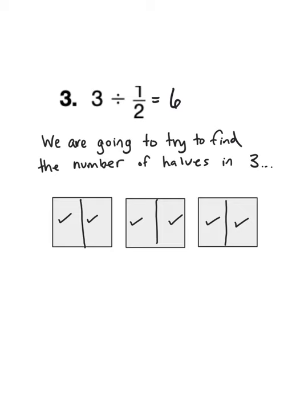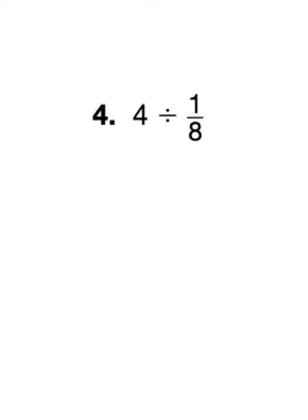Or in other words, 3 divided by 1/2 equals 6. Okay, let's look at another example: 4 divided by 1/8. Another way to think about this is to say we're going to try to find out how many eighths there are in four wholes. So if I draw four wholes and divide each one of them into eight equal pieces, I'll get my answer.